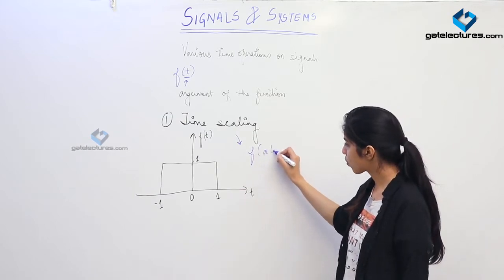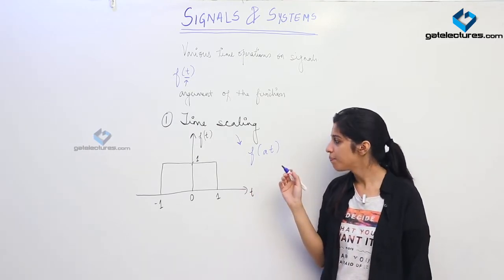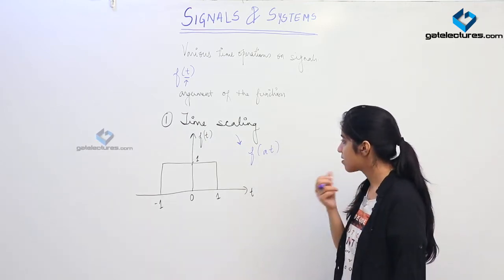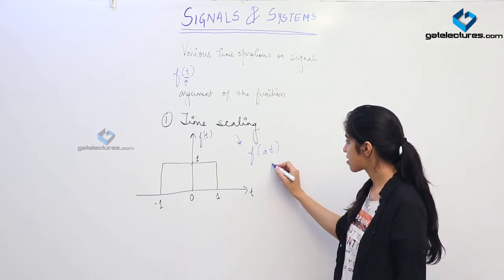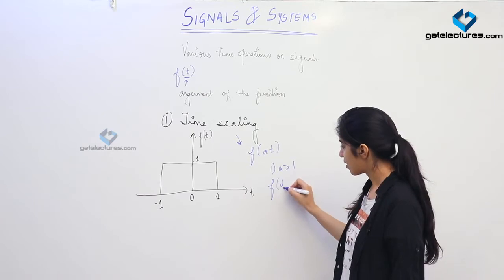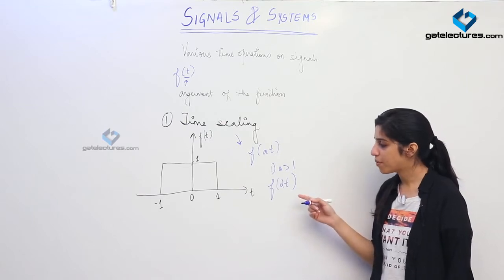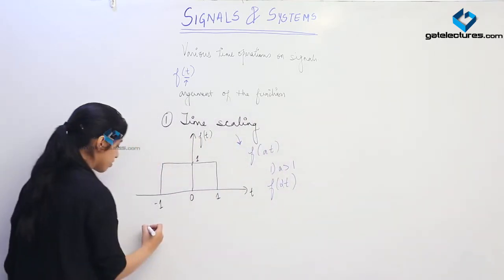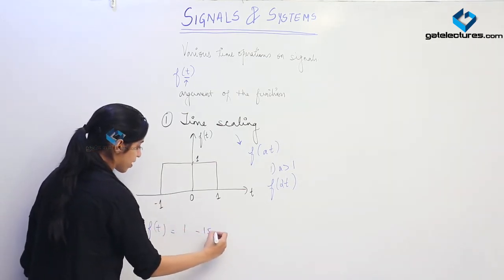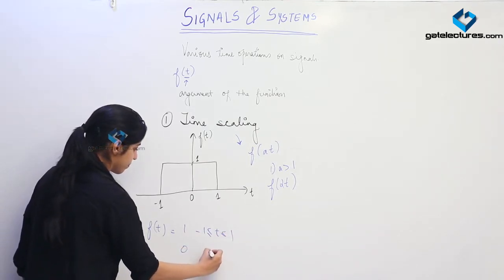I am multiplying the argument with some constant a. Now a can be any value — a can be greater than 1 or less than 1. There are two possibilities. First case: when a is greater than 1, suppose a = 2, then the function becomes f(2t). This function f(t) was originally defined as having value 1 whenever t lies between −1 and 1, and 0 otherwise.